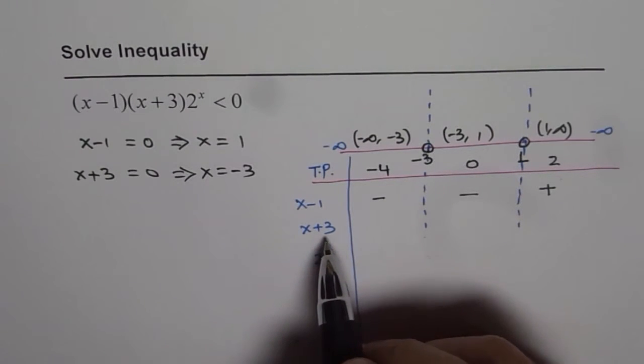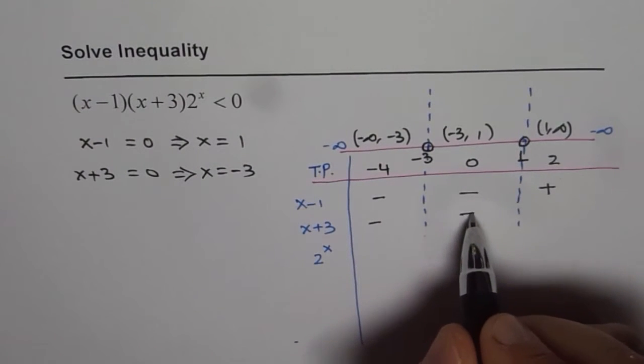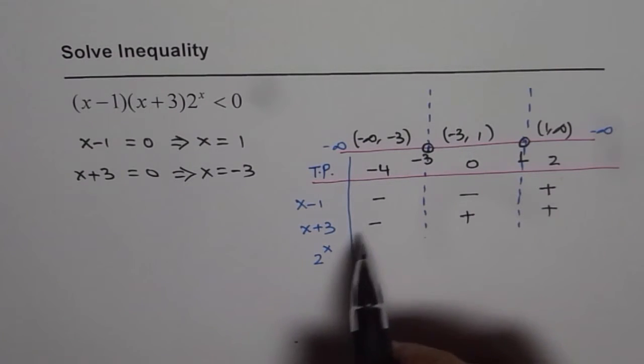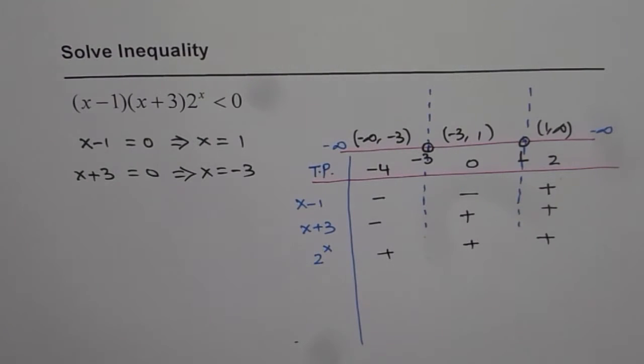The next factor x plus 3 will be negative for minus 4, positive for 0, and positive for 2. 2 to the power of x in the entire domain will always be positive. So we get these signs.